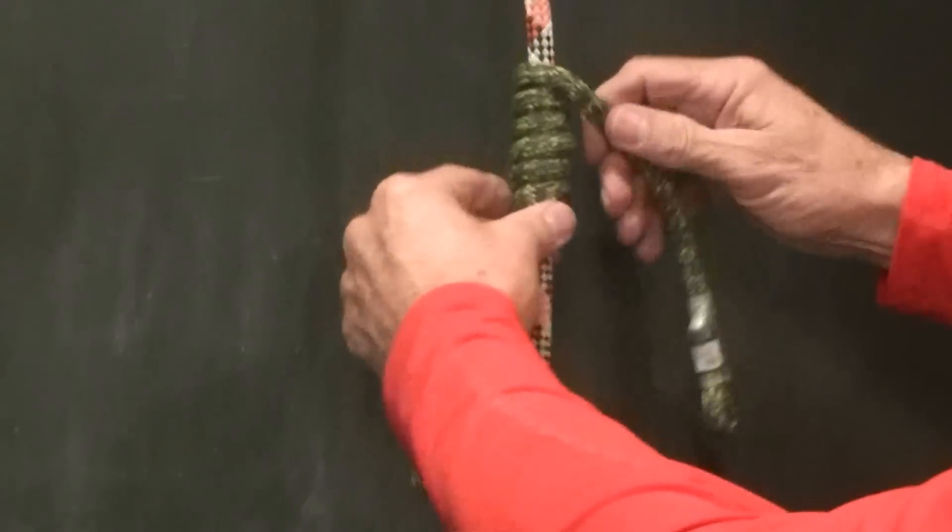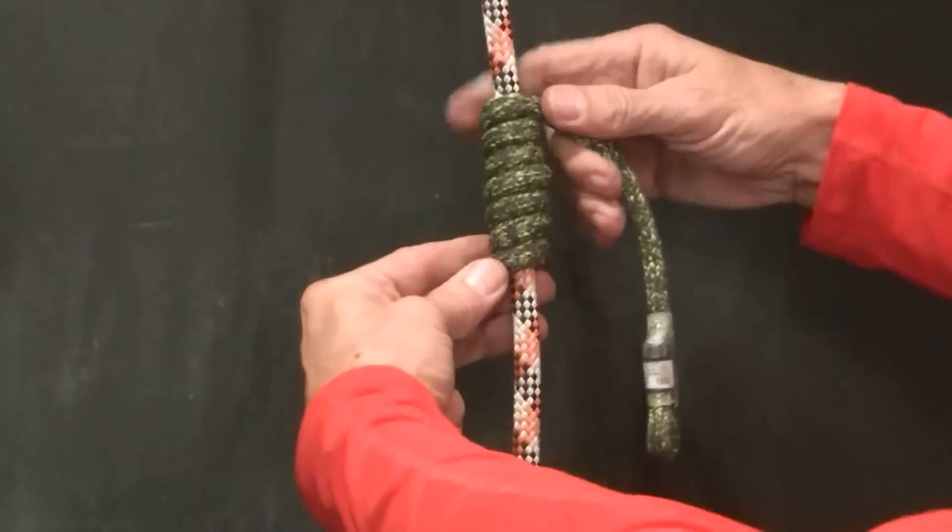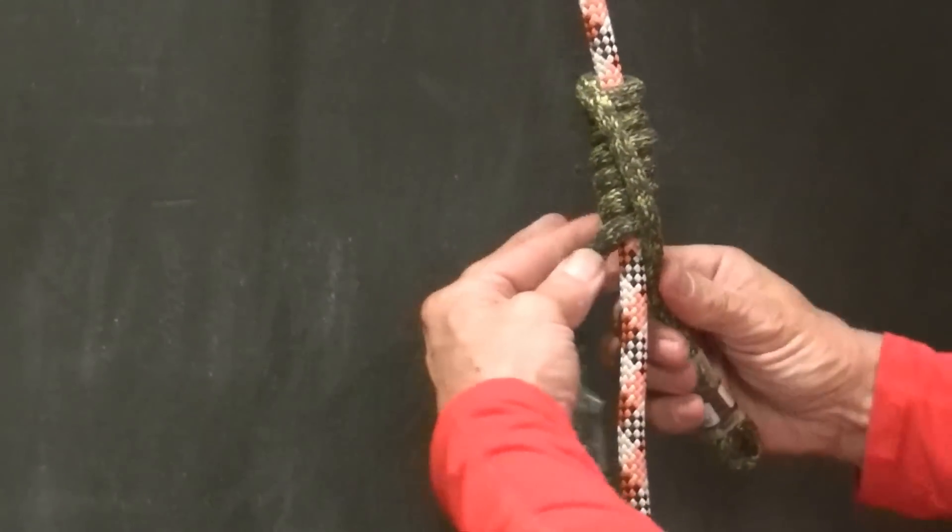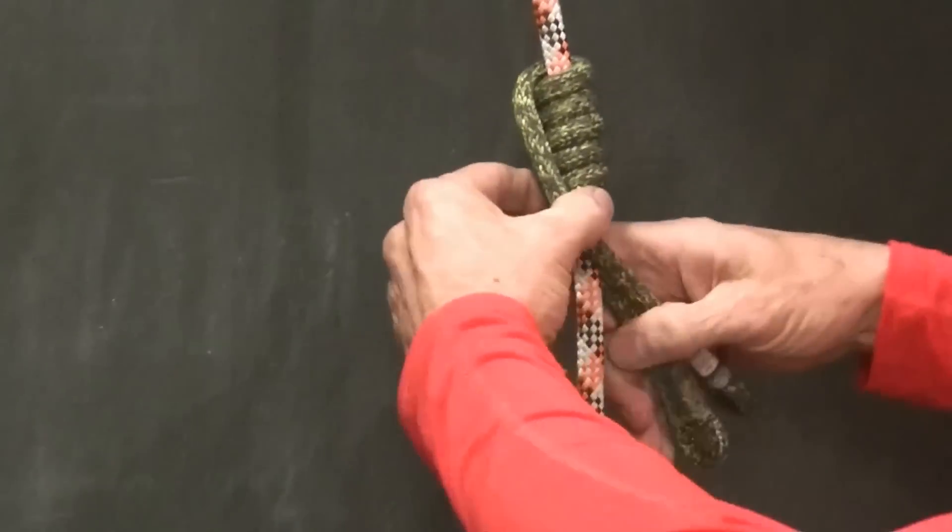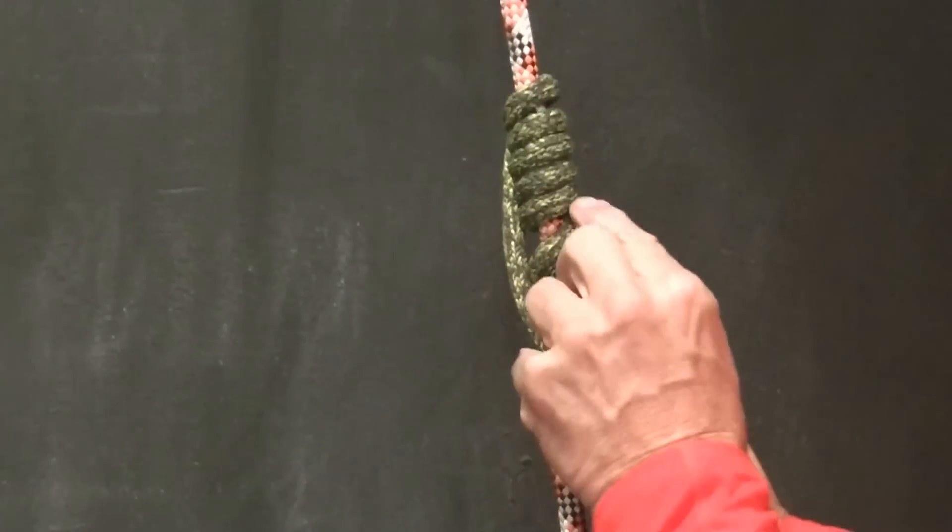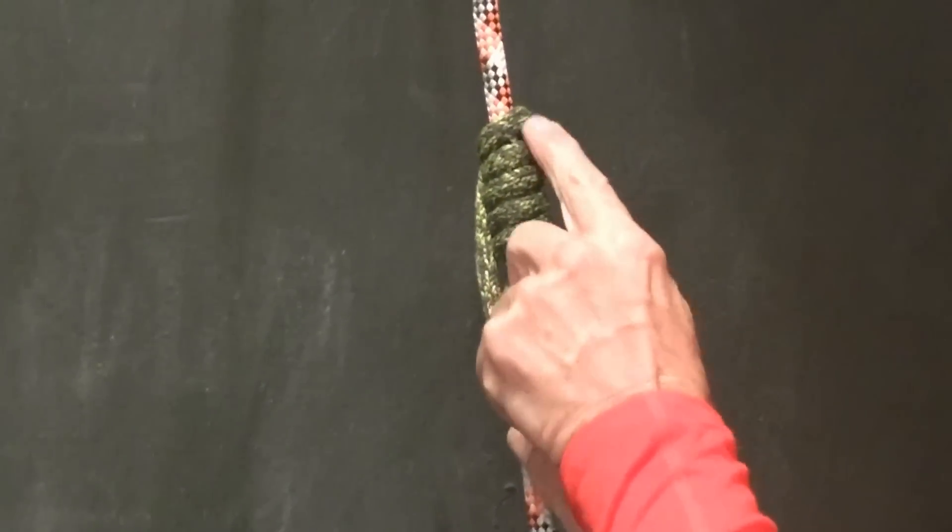Now, if we take one of those wraps and turn it into a braid, there's the cross and I bring it around on the back side to bind it. I now have one, two, three, four, five wraps and one braid.